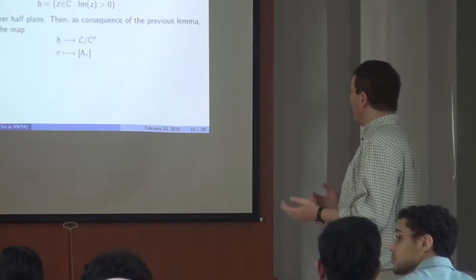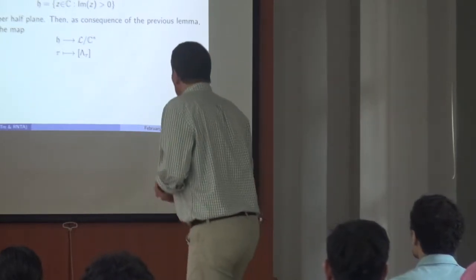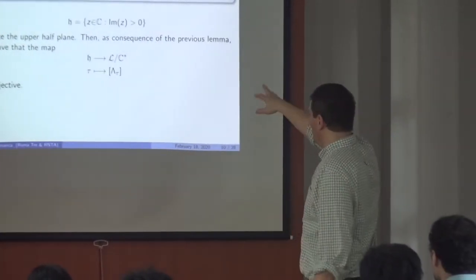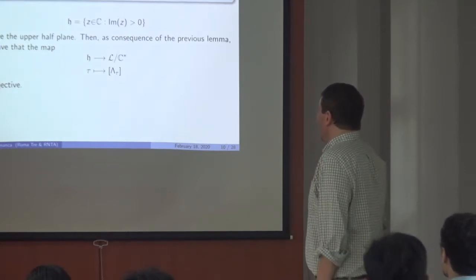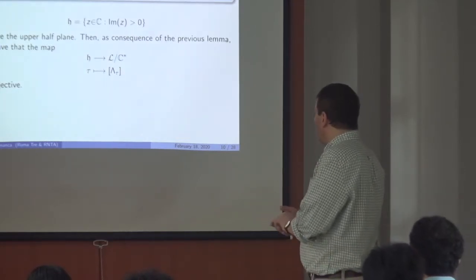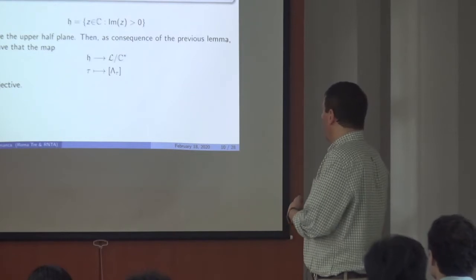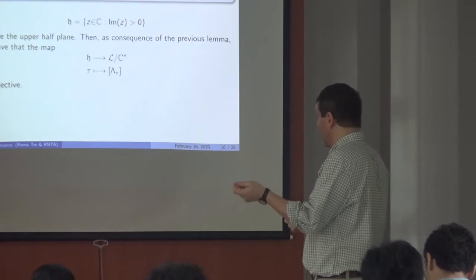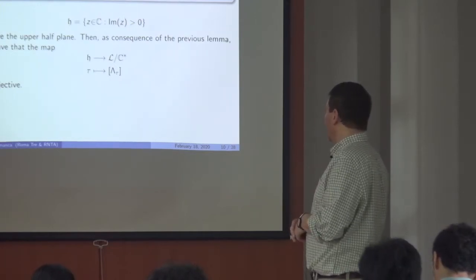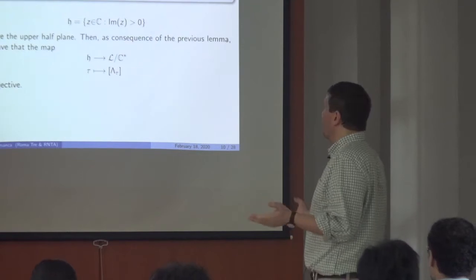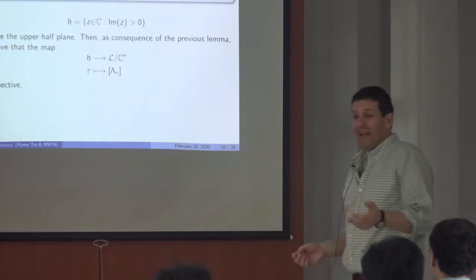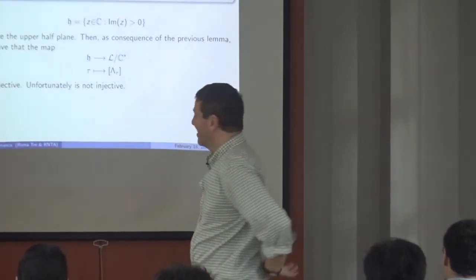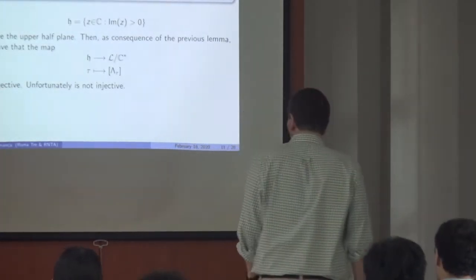Every lattice is homothetic to a lattice of that form, so if we take the upper half-plane ℍ (denoted by the German H), we have a surjective map from ℍ to script Λ / C* sending each τ with Im(τ) > 0 to the associated lattice ℤ + τℤ. Wouldn't it be nice if it were also injective? Unfortunately it's not, so we have to work more to find our model space.